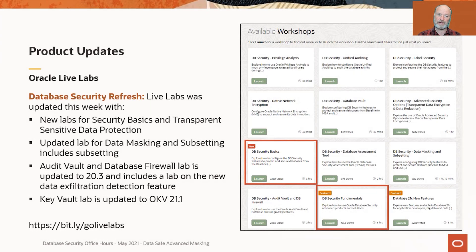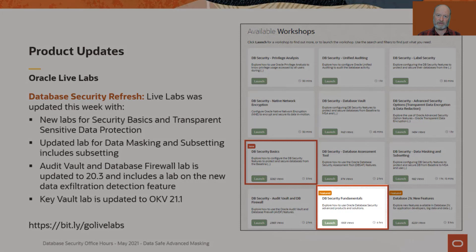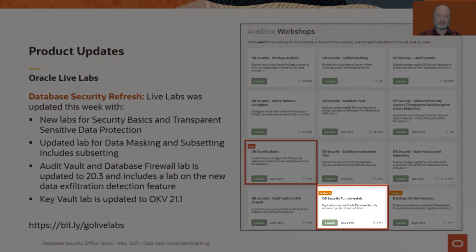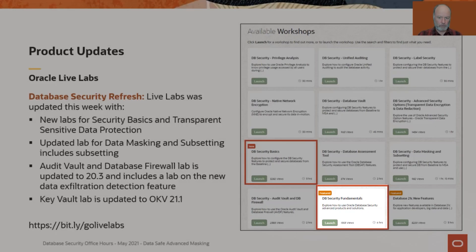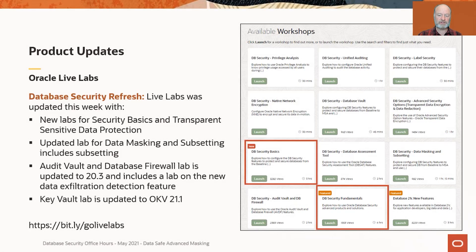If you do no other database security lab, this is the one you should look at. The next lab is database security fundamentals. This one's a little bit longer — six hours — but it includes all of the other labs that would work up to the maximum security architecture. Things like database vault, audit vault and database firewall, key vault. Just a really good chance to get hands-on with the latest and greatest for database security. So bit.ly/golivelabs.